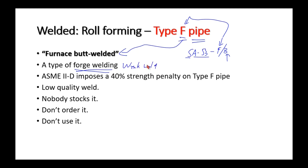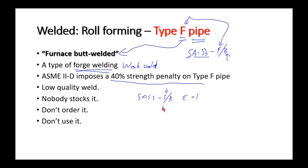ASME has never banned furnace butt welded pipe, but they impose a 40% strength penalty. So SA-53 S/B seamless has a longitudinal joint efficiency E of 1, but SA-53 Grade F/B has a longitudinal joint efficiency of only 60%. This material is considered only 60% as strong as seamless.